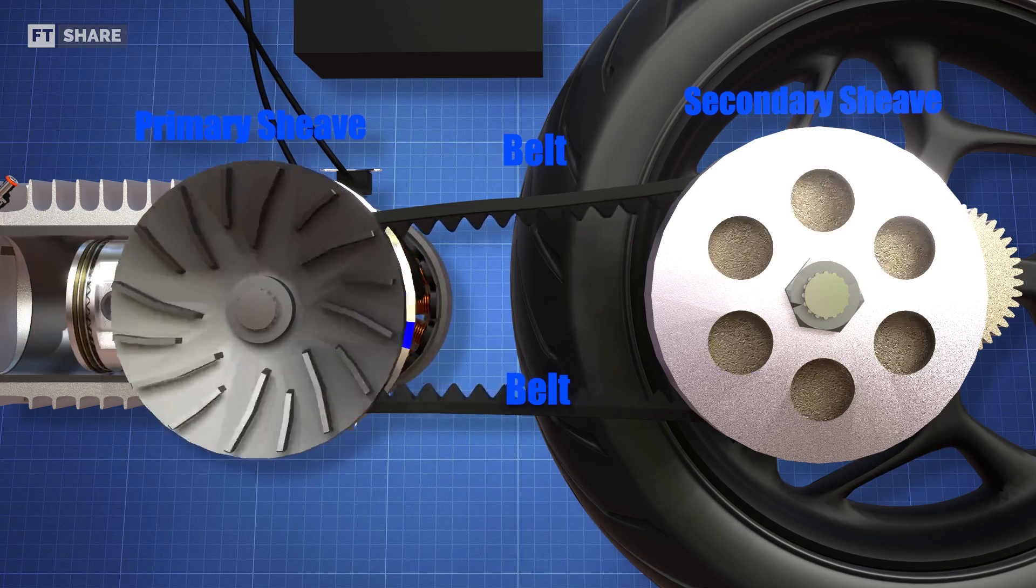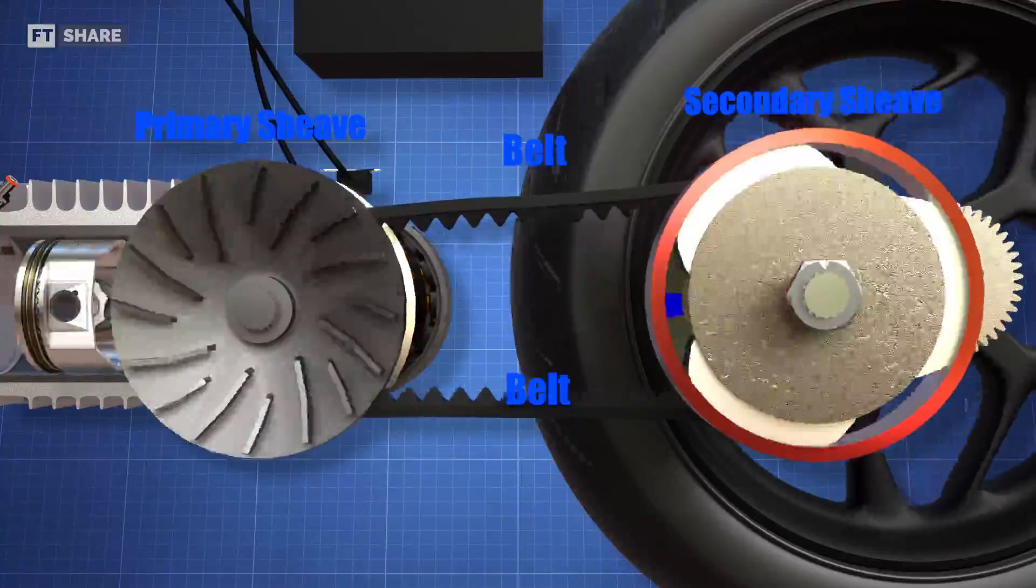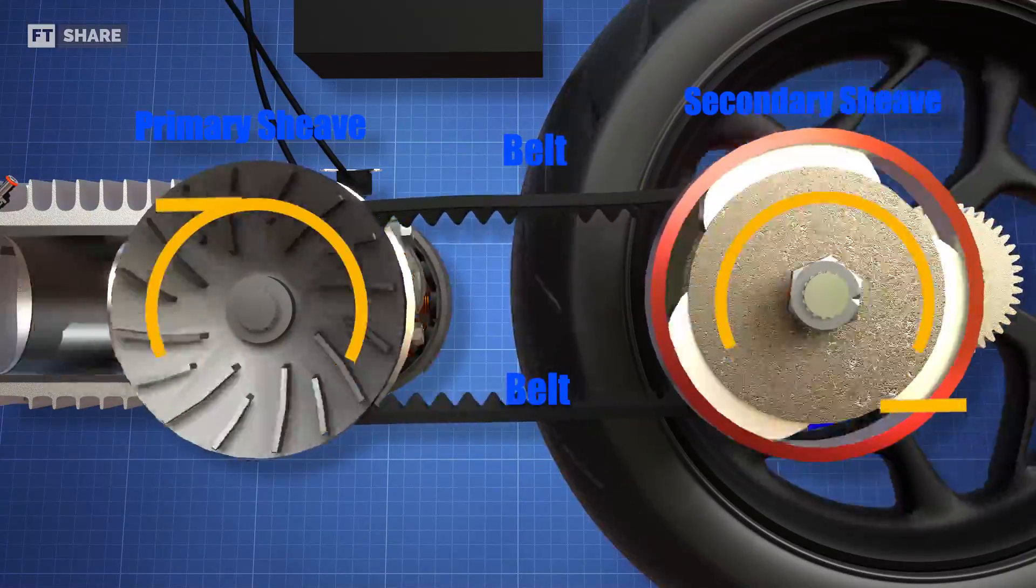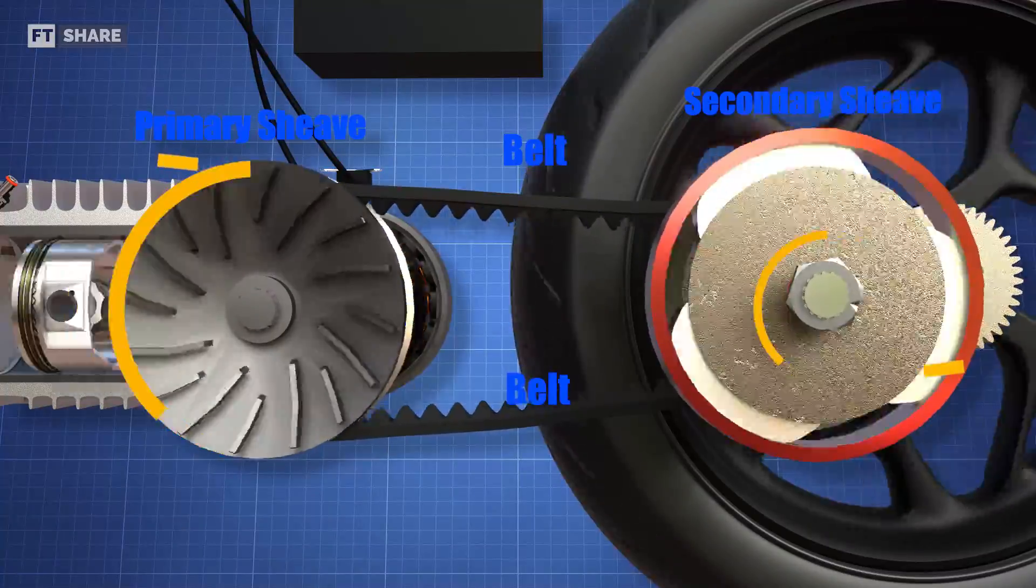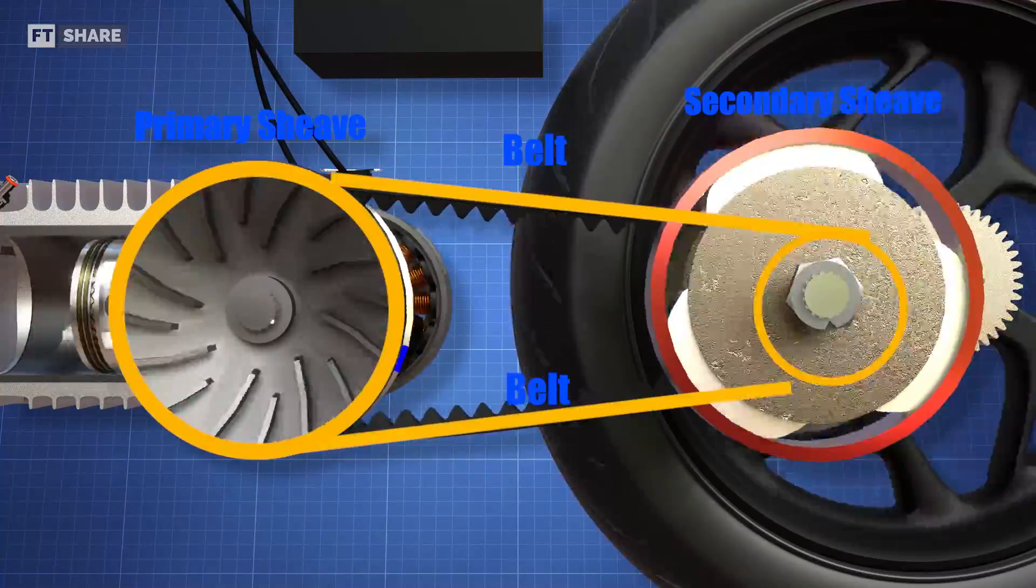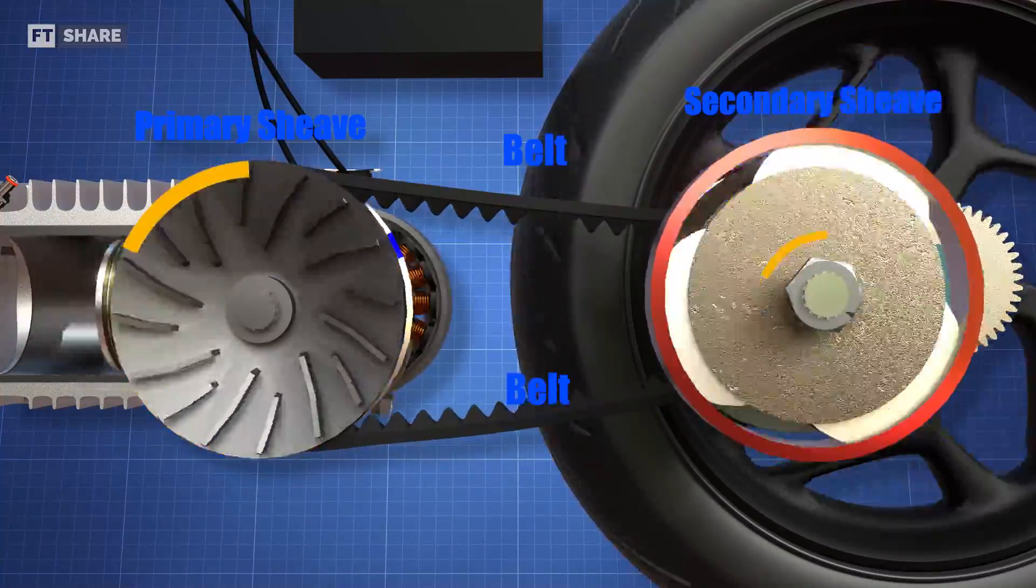When sufficient speed is reached, centrifugal force causes the arms to swing outward, and the friction linings come into contact with the clutch housing. This clutch housing functions to transfer power through the gear train to the rear wheel until it reaches the scooter wheel.